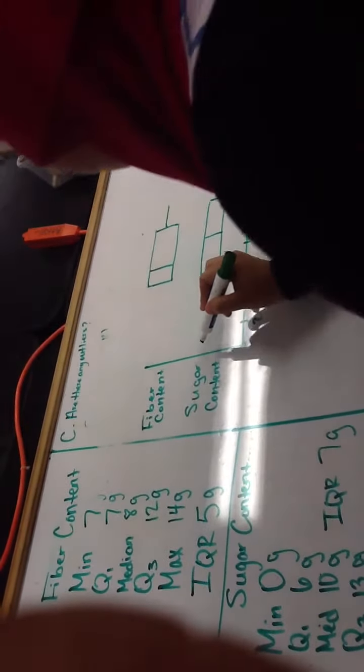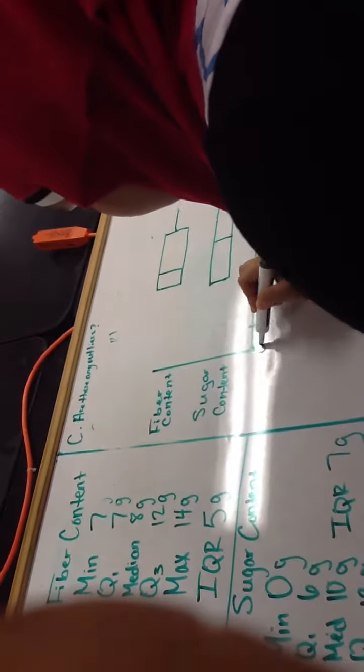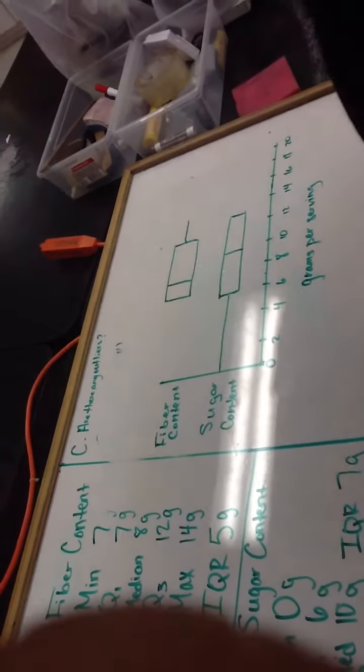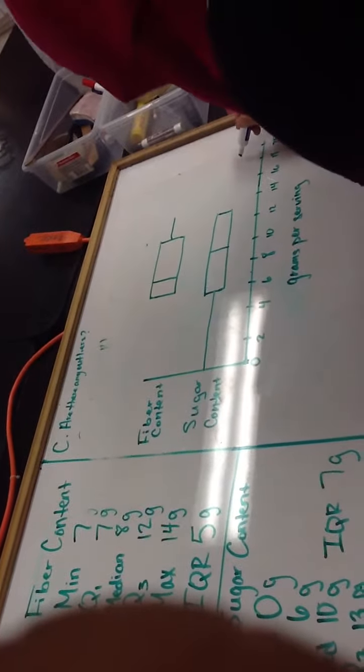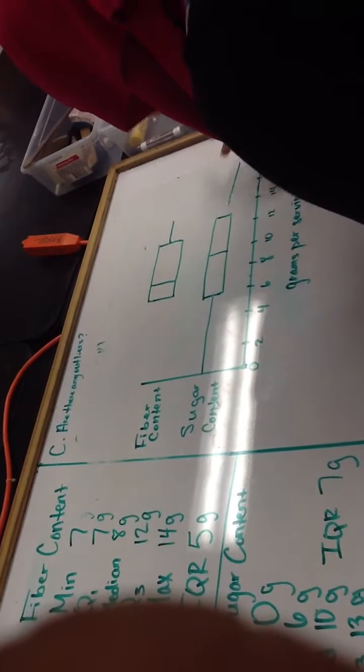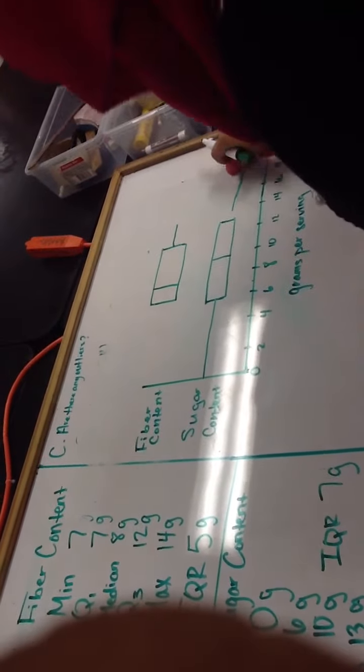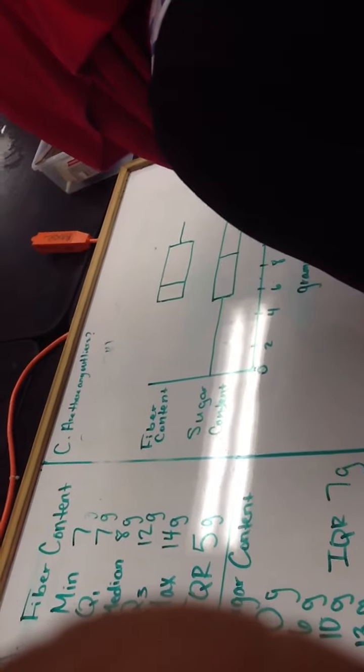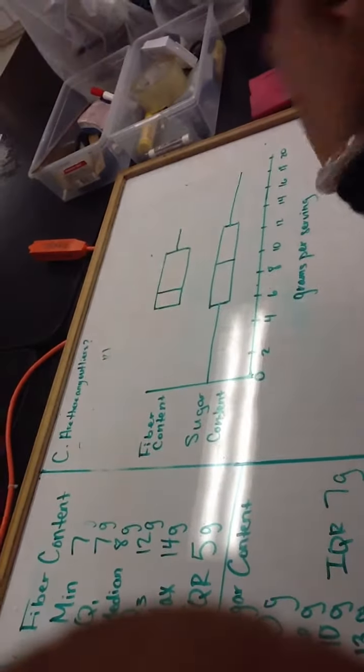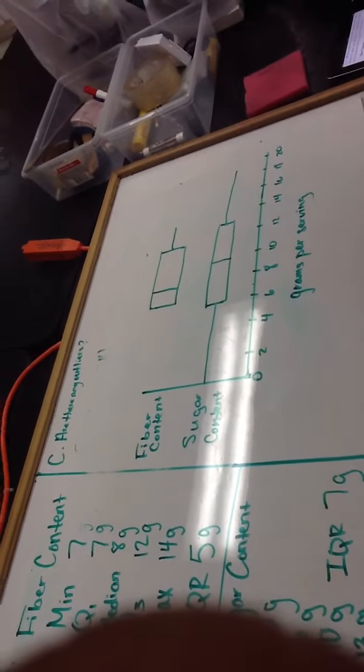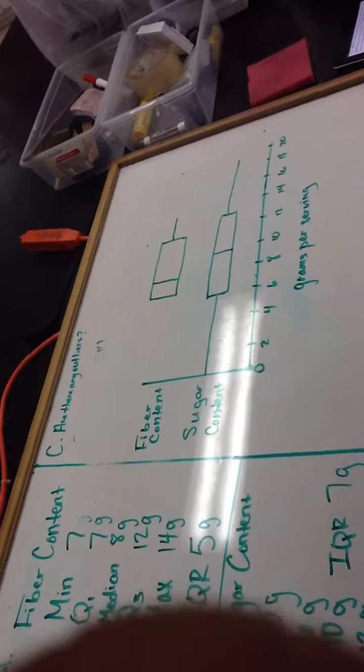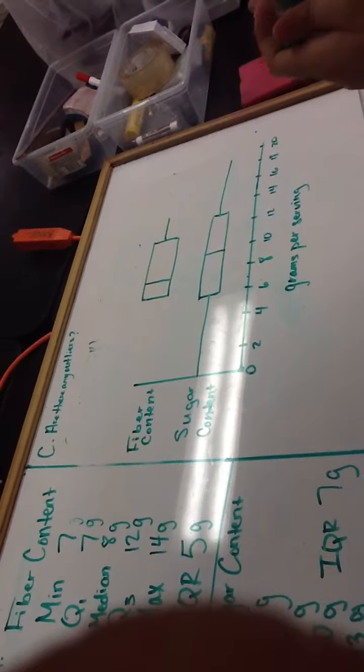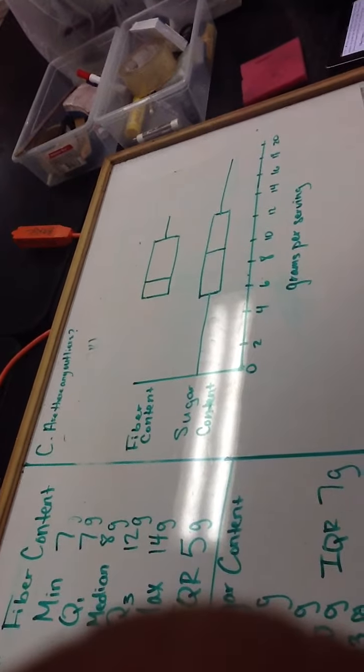Minimum value is at 0, which is here. That 0 extends from there. And the maximum value is at 19. And that is a box plot which compares the similarities and differences between the fiber content and sugar content of cereals.